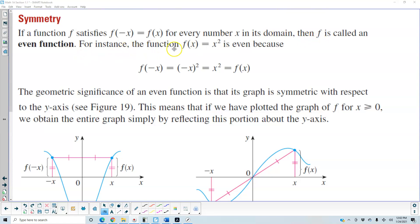For instance, the function f(x) = x² is even because if we use the input of negative x and plug it into the function, (-x)² becomes x², which equals the original function f(x).